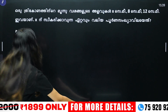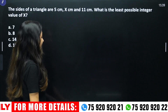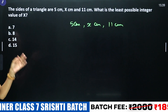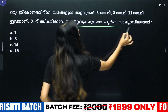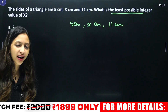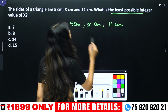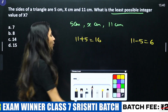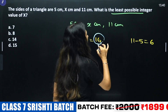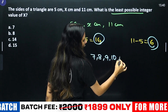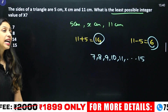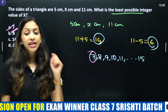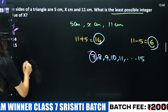Let's take a look at the sides of each triangle: 5 cm, x cm, and 11 cm. X is the least possible integer value. Using the triangle inequality, the least possible integer value of x is 7. So 7 will be our answer.